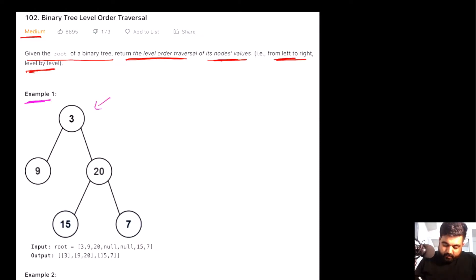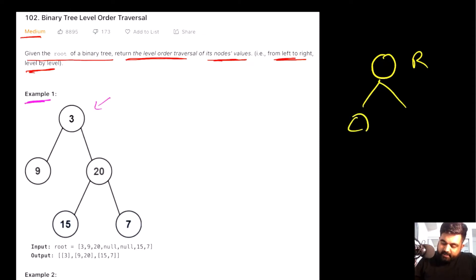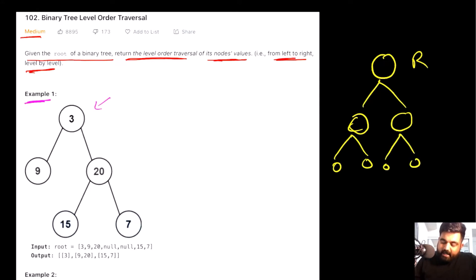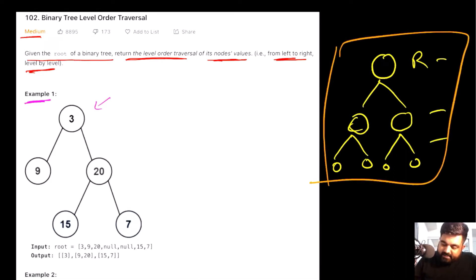For any binary tree, we always have a root node or parent node, and that parent node has some children nodes. Those children nodes can have children of their own as well. Every time a new set of nodes is added at the bottom, we can define a new level being created. So in this example, this is level one, this is level two, and this is level three.